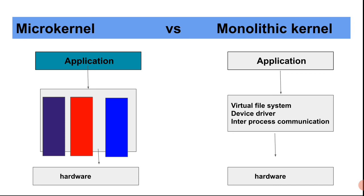Now let's look at the architecture. In the microkernel architecture, the blue, red, and green services — representing the services between application and hardware — are divided. They do not share a single address space; each has created its own connection and things are divided in the internal architecture.